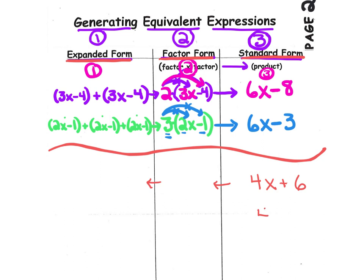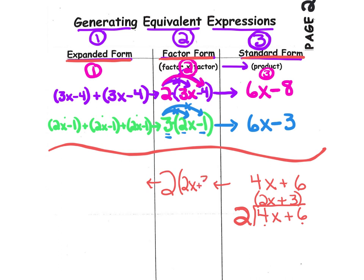What we need to do is take 4x plus 6 and divide out a common factor. If you look at the 4 and the 6, we can see our common factor is going to be 2. 2 divided into 4x leaves us with 2x, and 2 divided into 6 leaves us with 3. We have a factor of 2 and our other factor is 2x plus 3, so we write that as 2 times the quantity 2x plus 3. That's in factor form.